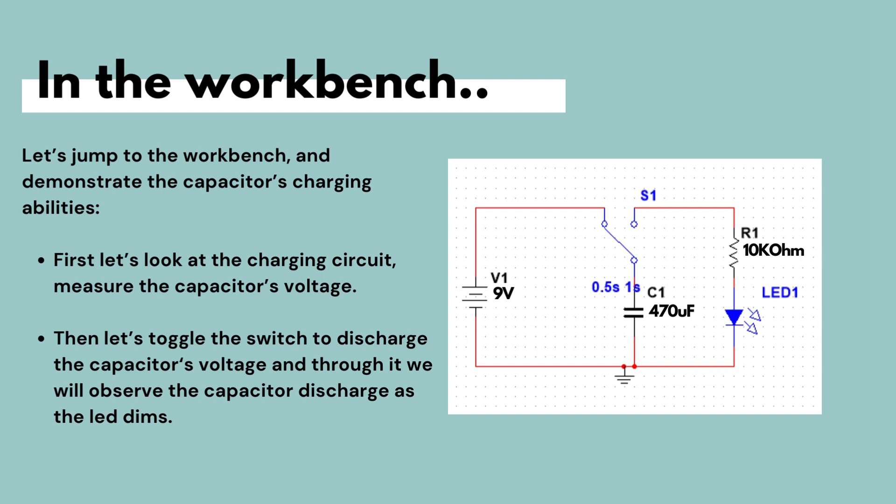So first, we will take a look at the charging circuit where we will be charging the capacitor. Then we will toggle the switch to discharge the capacitor's voltage through an LED. So you will see that the capacitor will act as a battery for the LED. And as it discharges, the LED will dim.